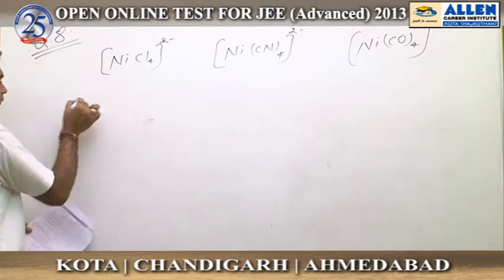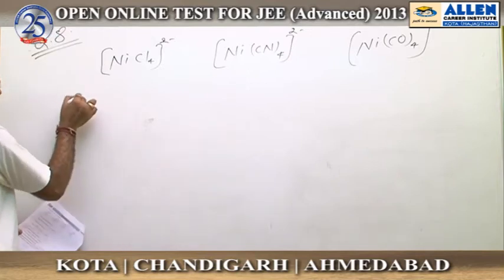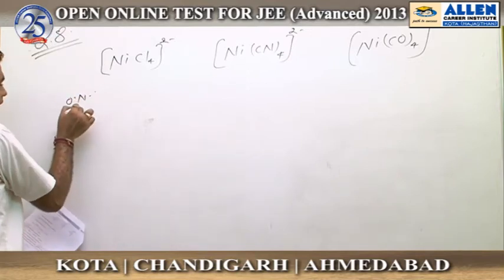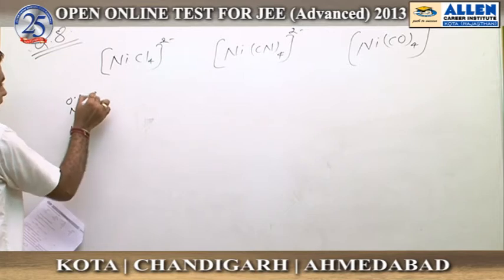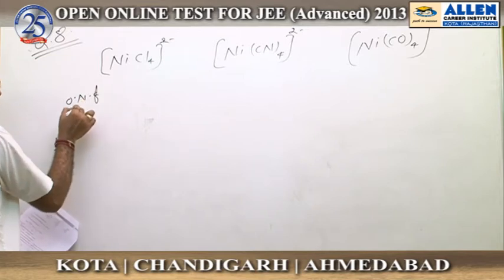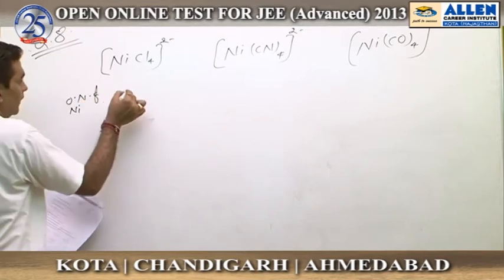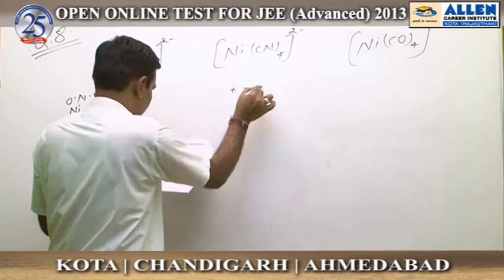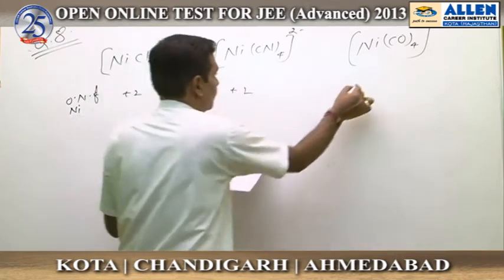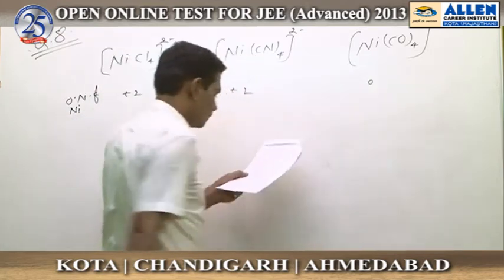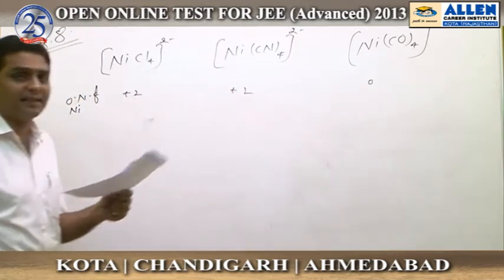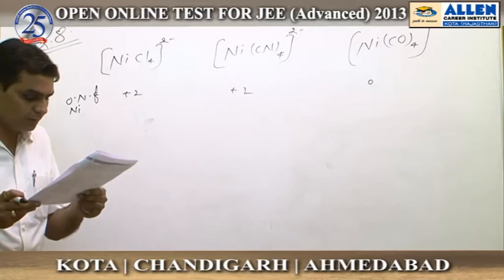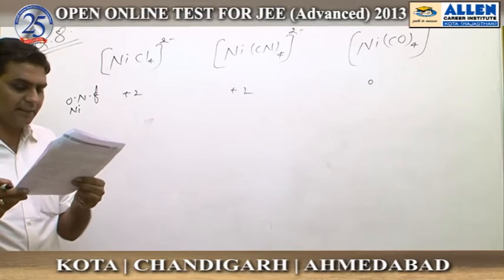Option A — oxidation number of nickel: in complex 1 it is +2, in complex 2 it is also +2, but in complex 3 (the carbonyl complex) it is 0. So this is not a similarity but a dissimilarity. Option A is incorrect as a similarity.